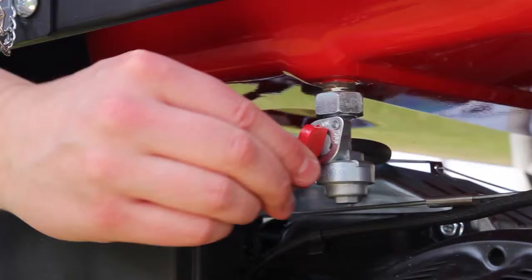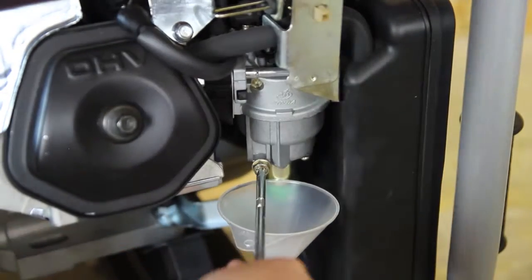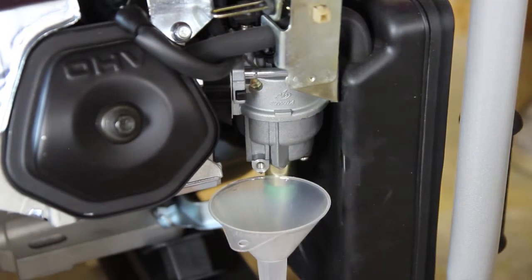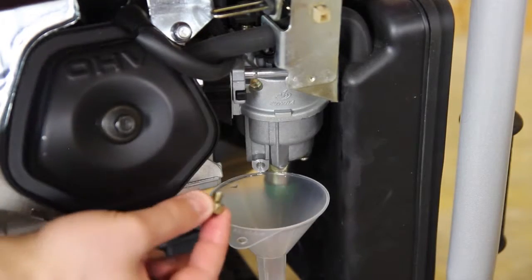Turn the fuel valve on. Position the container under the carburetor drain screw. Loosen the drain screw. Allow the fuel to completely drain and re-tighten the drain screw.